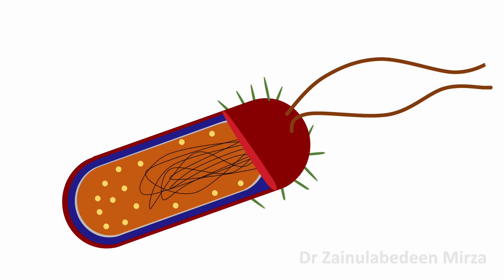Prokaryotic cells are between 0.1 µm to 0.5 µm, and their size can be 0.2 µm, like Mycoplasma genitalium.